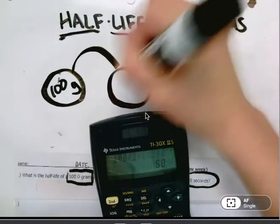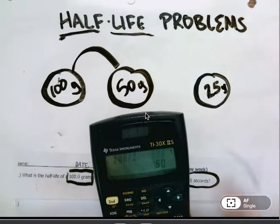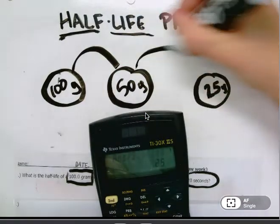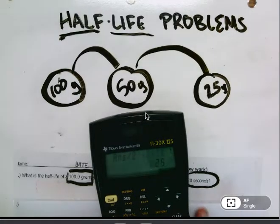So after one half-life I have 50 grams. I take 50, divide it by 2, and I see that I end up with 25, my ending amount.